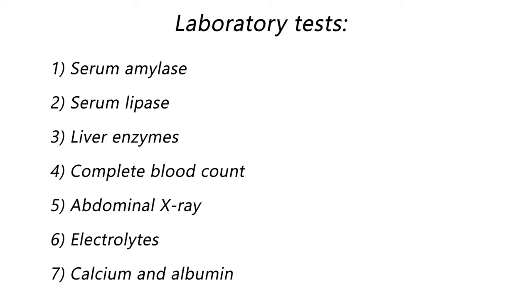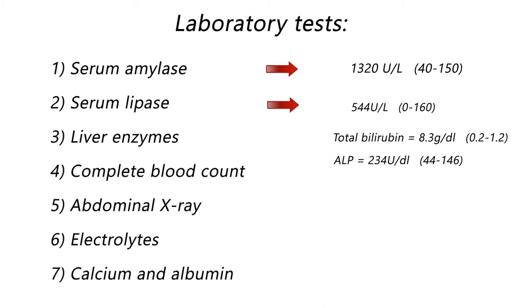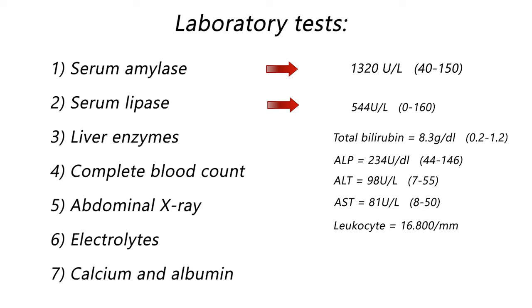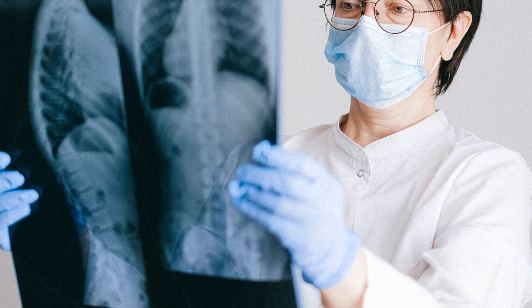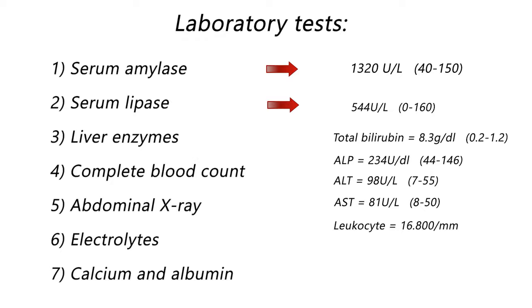After a while, the laboratory results are received. Amylase level is 1,320 units per liter. Lipase level is 544 units per liter. Total bilirubin is 8.3 grams per deciliter. Alkaline phosphatase is 234 units per liter. ALT is 98 units per liter. AST is 81 units per liter. Leukocyte count is 60,800 per millimeter. Abdominal X-ray shows a non-specific gas pattern with no sign of pneumoperitoneum or intestinal obstruction.